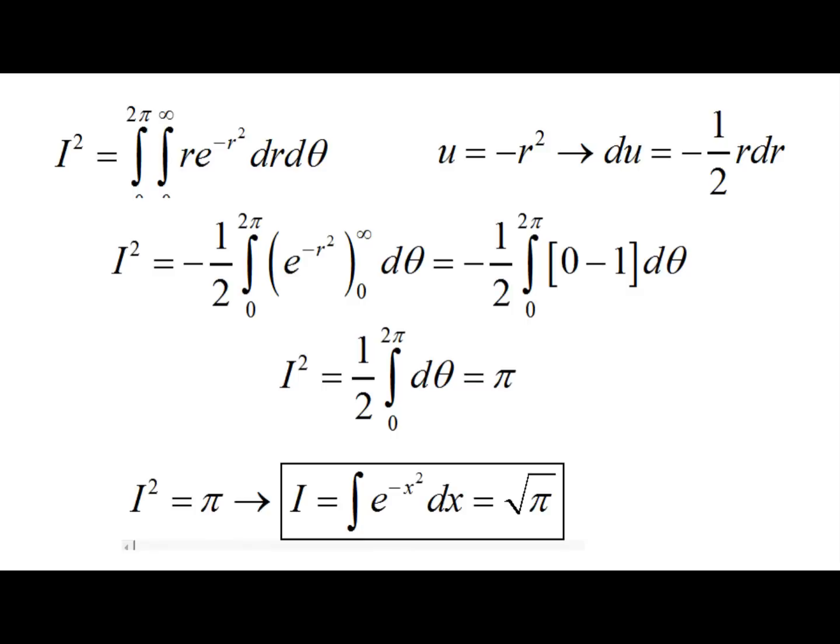But remember, we don't want I squared. Our original integral was I, so we simply need to take the square root of both sides. This gives us our final answer of I, the original integral, is equal to the square root of pi.